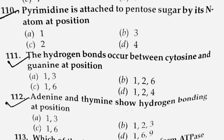Next question: The hydrogen bonds occur between cytosine and guanine at which positions? In adenine-thymine (A-T), there are two hydrogen bonds. In guanine-cytosine (G-C), there are three hydrogen bonds at positions 1, 2, and 6. The answer is option number B.